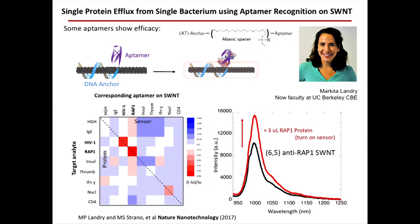She did not want to use CoFMOR — she wanted to use aptamers, which are actually very difficult to use. She did get an aptamer CoronaPhase to work partially. What she showed is that if you have any hope of getting an aptamer to recognize an analyte, you need to use an A-basic spacer. She wraps the nanotube in DNA and puts in this A-basic spacer — you have to screen and find the right length. She looked at HGH and HIV-1; she was only really able to get an aptamer to recognize two analytes: HIV-1 and RAP1, which make very nice turn-on sensors.